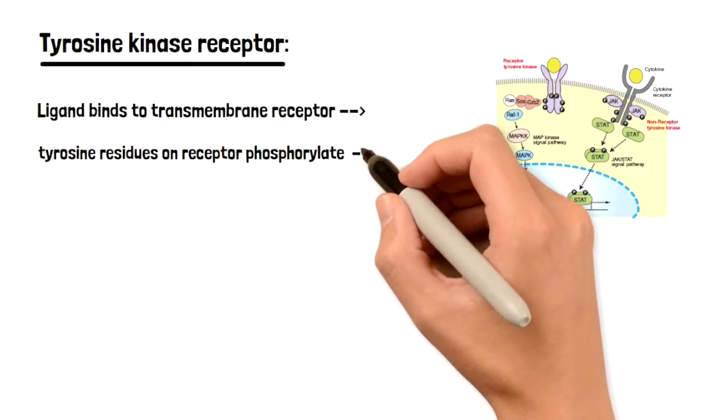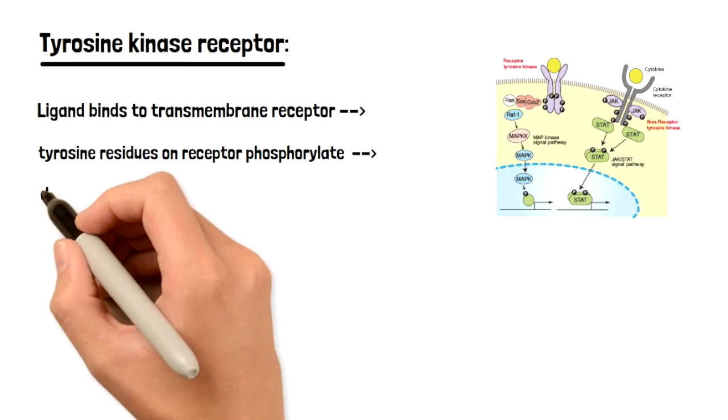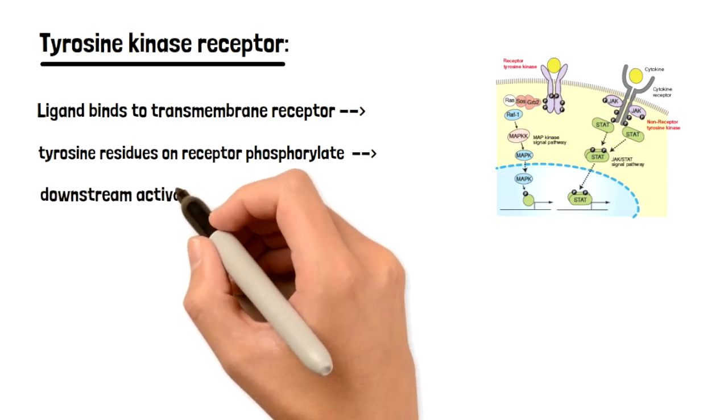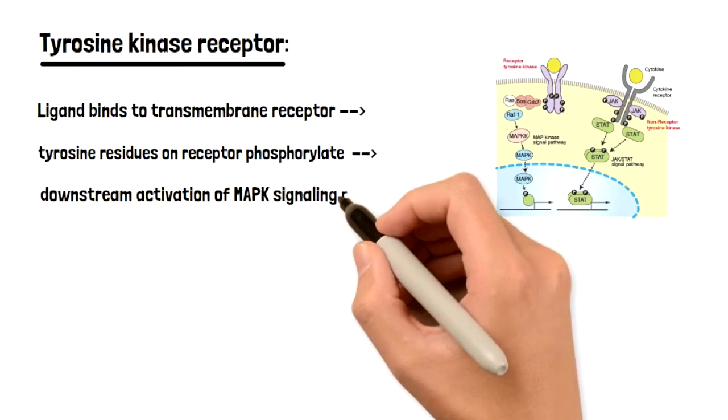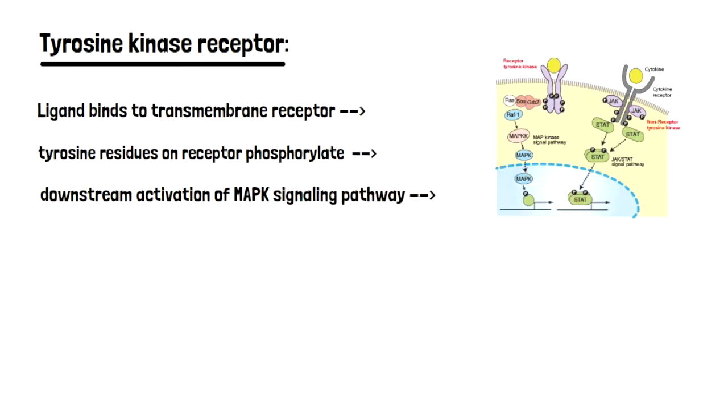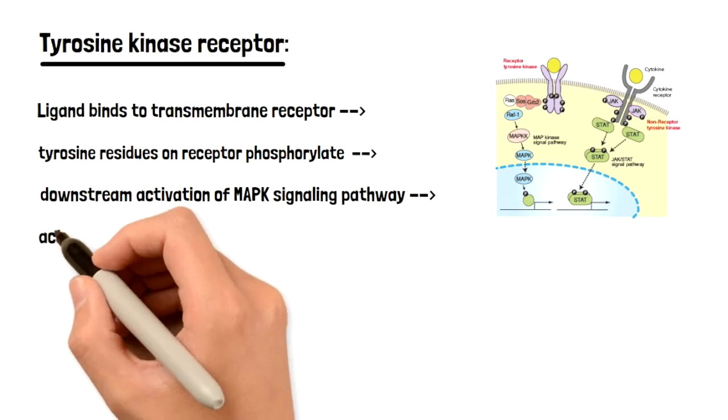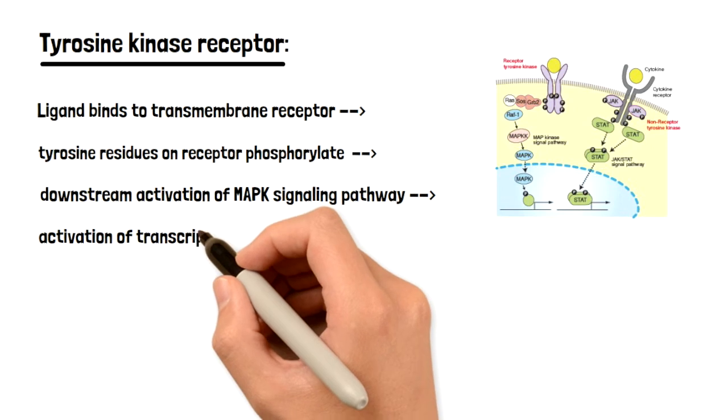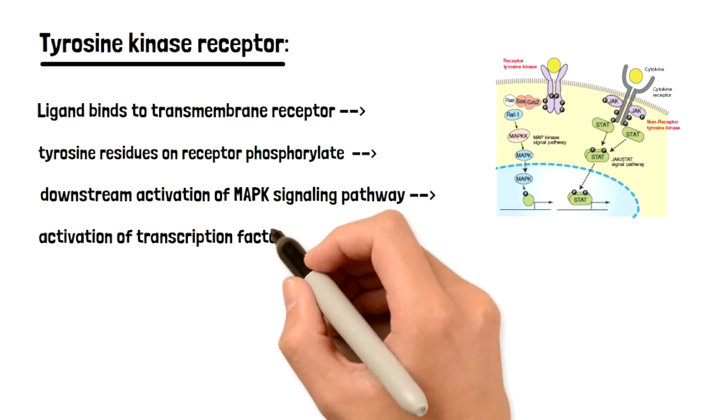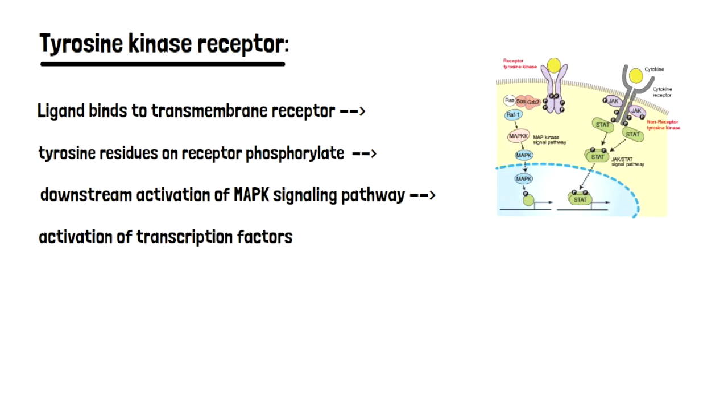Now this phosphorylation is going to cause downstream effects of activating the MAP signaling pathway. Once the MAP signaling pathway is activated, that's going to cause more downstream effects until ultimately it's going to activate transcription factors within the nucleus. And this is how this tyrosine kinase receptor pathway works.